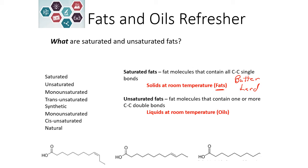Unsaturated fats contain one or more carbon-carbon double bonds, and so these are more likely to be liquids at room temperature. We refer to those as oils, and they typically come from plant sources. So these would be things like olive oil or peanut oil, but they are unsaturated fats.